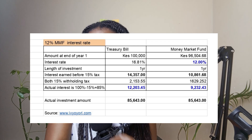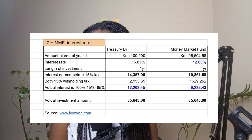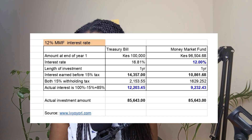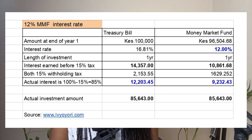Let's do another one, because we also have money market funds that give 12% interest. When we do a calculation for 12% interest using the same investment amount of 85,643 shillings, with monthly compounding and a one-year duration, we find that our gross interest is going to be 10,861 shillings. When we take away the 15% tax, we're going to remain with 9,232 shillings.